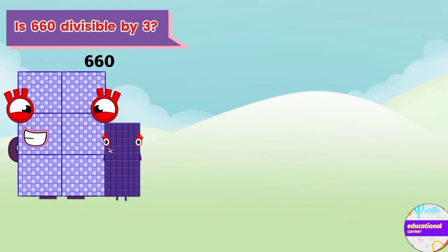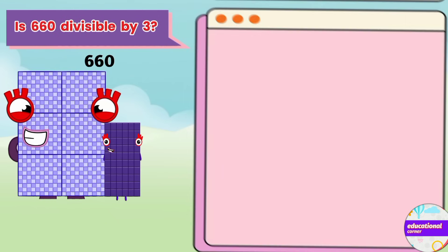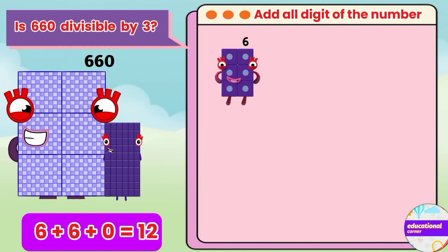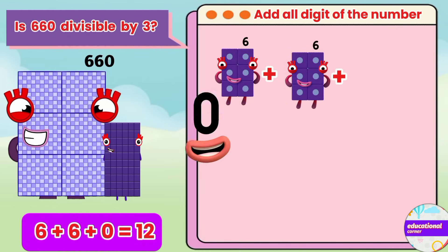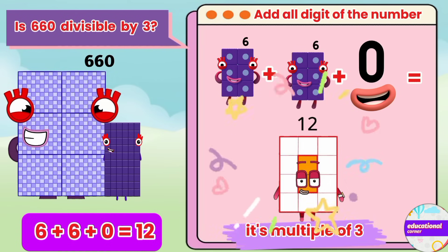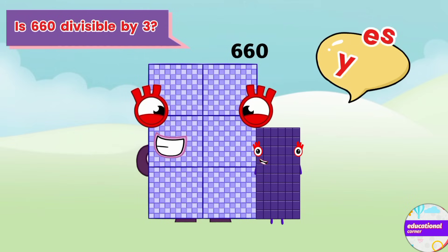Is 660 divisible by 3? Let's check. 6 plus 6 plus 0 equals 12. It's a multiple of 3. Yes!